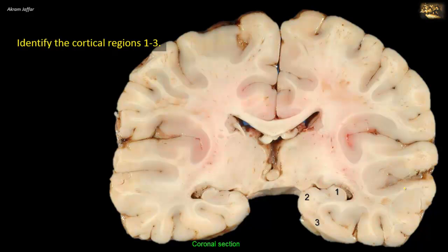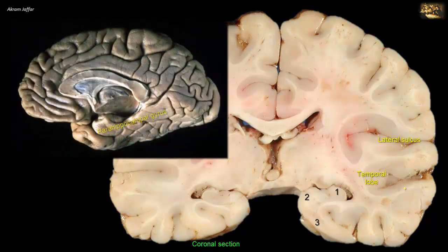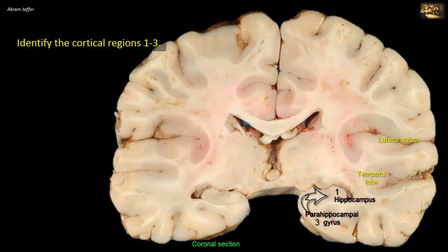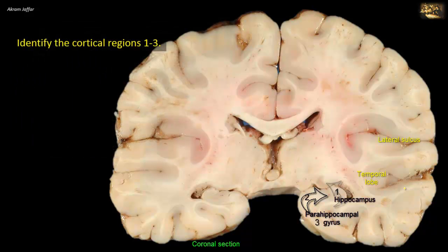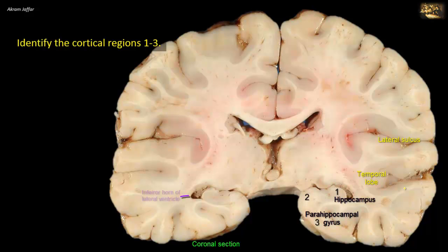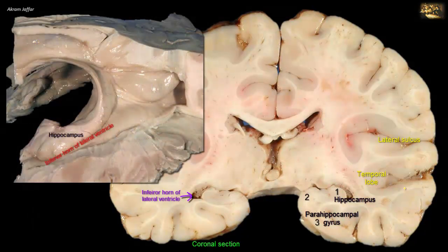This is a coronal section of the cerebrum showing the temporal lobe inferior to the lateral sulcus. On the medial aspect of the inferior surface of the temporal lobe, the section passes through the parahippocampal gyrus. The hippocampus develops as an expansion from the medial edge of the temporal lobe and falls upon itself to occupy the floor of the inferior horn of the lateral ventricle. Thus, 1 is the hippocampus, the infolded part.